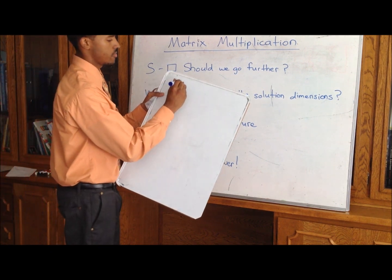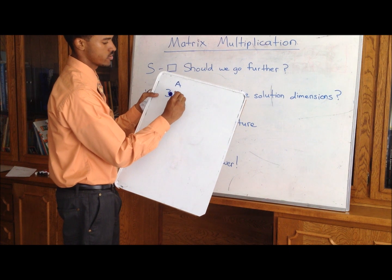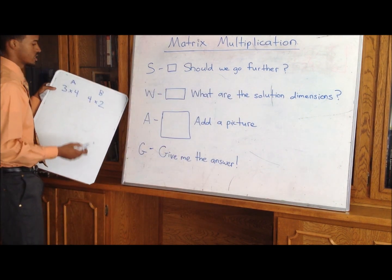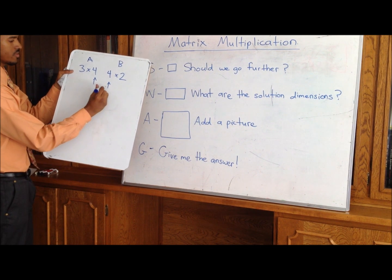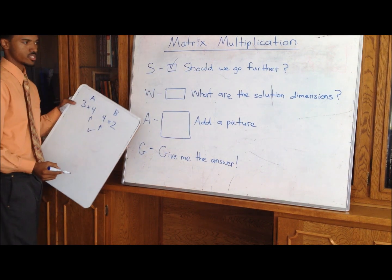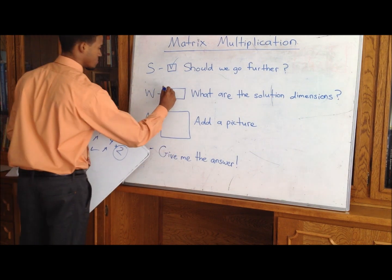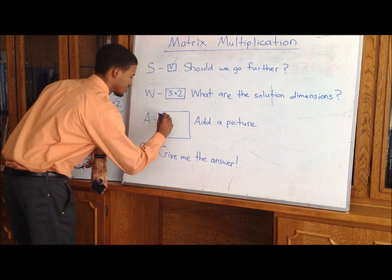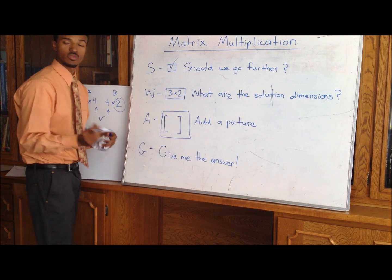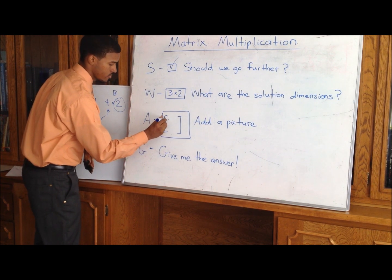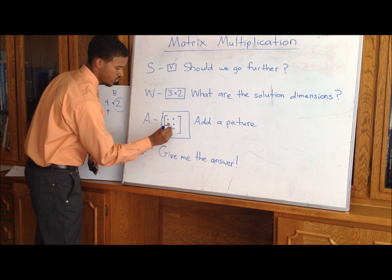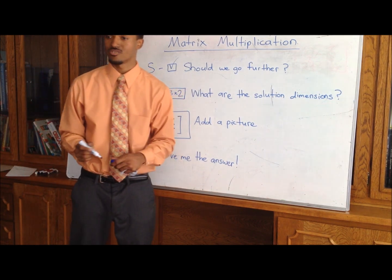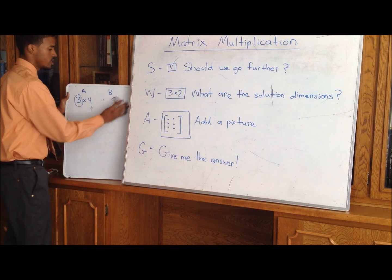Let's say we have matrix A (3 by 4) times matrix B (4 by 2). SWAG checklist: S — should we go further? The 4 and 4 match up, yes. W — solution dimensions: look at outer numbers, 3 by 2. A — add a picture: what does a 3 by 2 matrix look like? That's 3 rows, 2 columns — we'll put dots where the entries are. That's the raw form of the answer. Finally, G — give me the answer. That's the part we're about to get into.